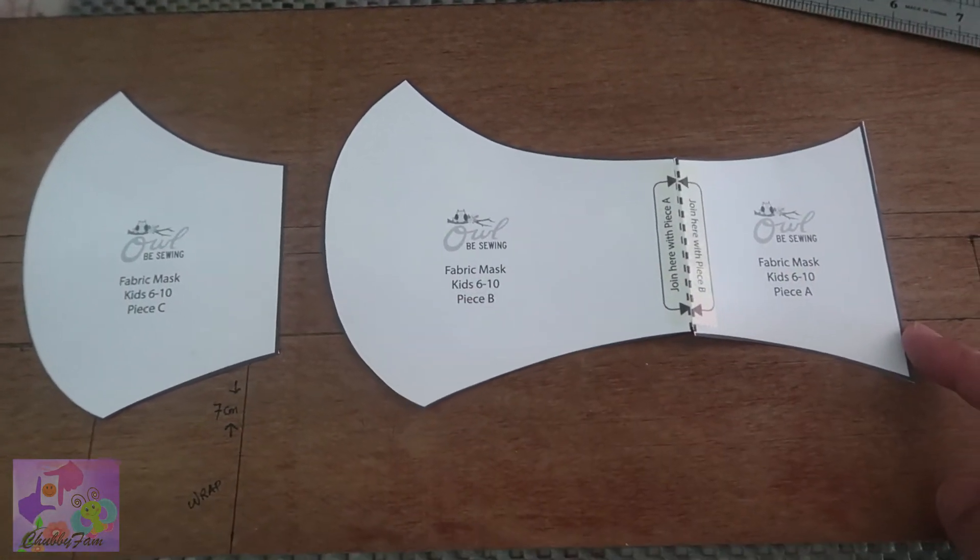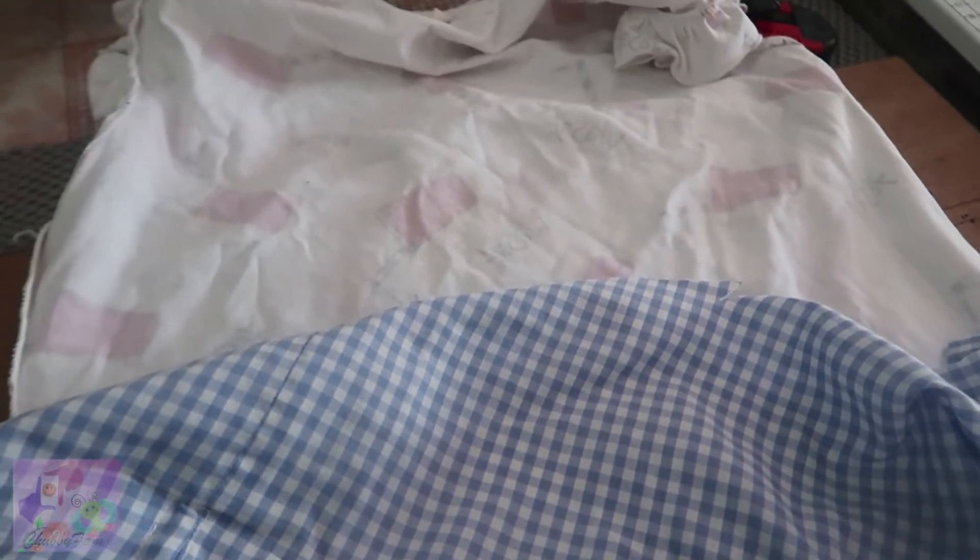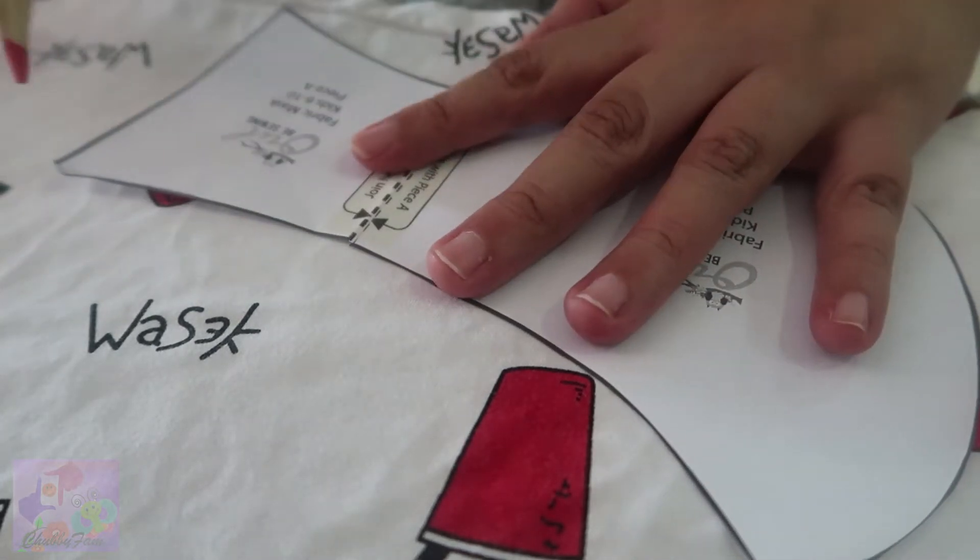Let's see, I'll be using Liyan's old t-shirt and for the pocket I'll be using this one, her old dress. So I have this piece of fabric and I'm going to trace it.